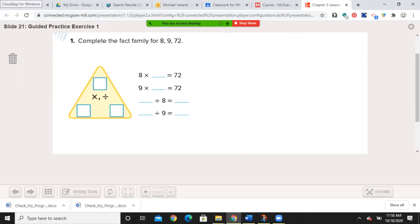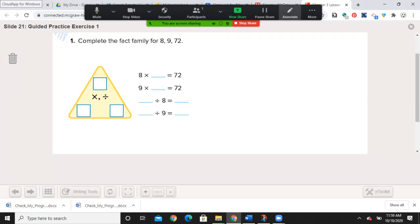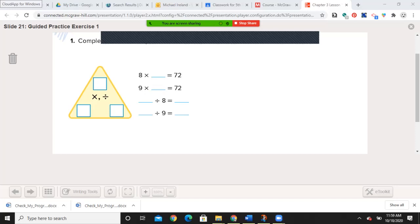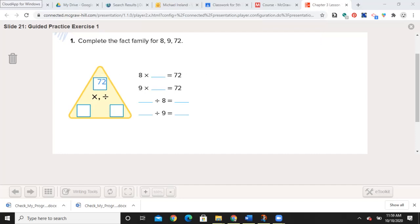Let's do one together. Complete the fact family for 8, 9, and 72. I like to put my big number right on the top. I'm going to use my annotation tool. And I have an 8 and a 9. So now I just have to fill in blanks, essentially. 8 times 9 is 72. It's the only number missing. 9 times 8 is 72. Now when you do the division ones, the big number goes first. 72 divided by 8 is 9. 72 divided by 9 is 8. So if you're catching the patterns on these, it starts to get pretty easy to fill these in.